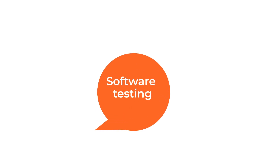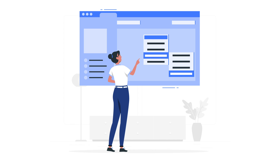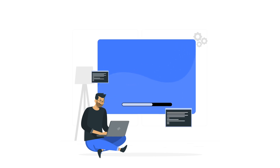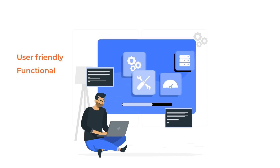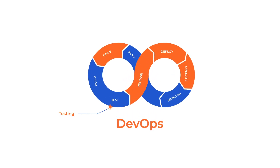Finally, let's take a look at software testing. Software testers are responsible for ensuring that applications are functioning correctly and meeting user requirements. Software testing is the process of evaluating a software application or system to identify defects, errors, or bugs. Software testers test applications to ensure that they are user-friendly, meet functional and non-functional requirements, and that they are secure and reliable. In traditional software development methodologies, testing is often carried out as a separate and distinct activity that takes place after development is complete. However, in DevOps, testing is an integral part of the software development process and is integrated throughout the entire software development lifecycle.